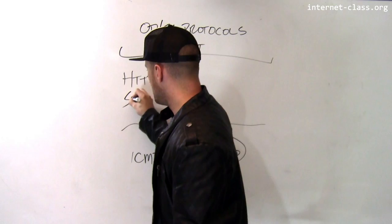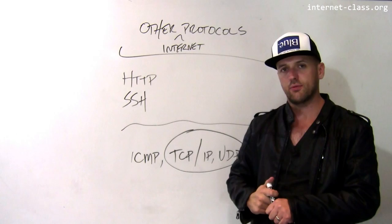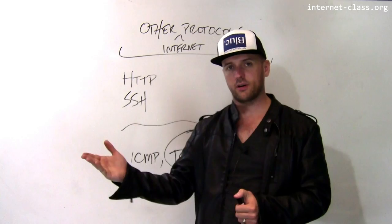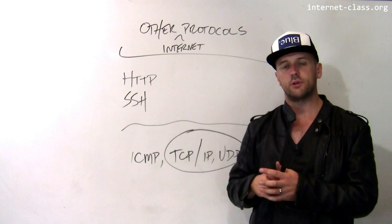SSH: when you log into a shared machine like Timberlake, or some machine that you use to run experiments or to do work, you do so over the Secure Shell. The Secure Shell has its own protocol — it requires a server on the other end, and there's a protocol between the client and server that allows you to use the machine as if you were logged in locally.